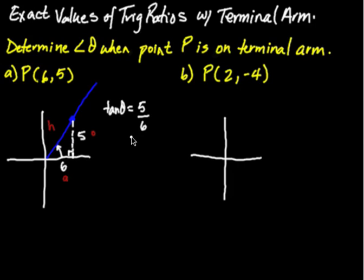If you want to go a little further and actually find the angle, you just have to use your calculator and your inverse button. Theta is going to equal tan inverse of 5 over 6. On my calculator, rounding to a whole number, that comes up to be 40 degrees.